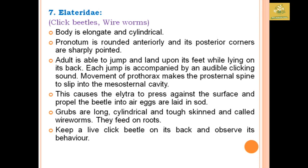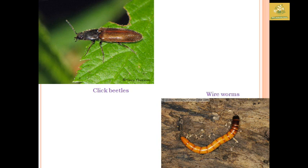Elateridae comprises click beetles and wireworms. The body is elongate and cylindrical. The pronotum is rounded and the anterior and posterior corners end in short points. Grubs are long, cylindrical, and tough-skinned, called wireworms, feeding mainly on roots. Click beetles get their name from their behavior: when placed on their back, the adult can jump and land on its feet, each jump accompanied by a clicking sound. This is due to the movement of the prothorax making the prosternal spine slip from the mesosternal cavity.